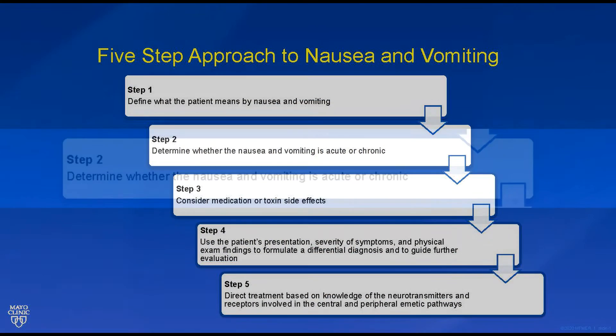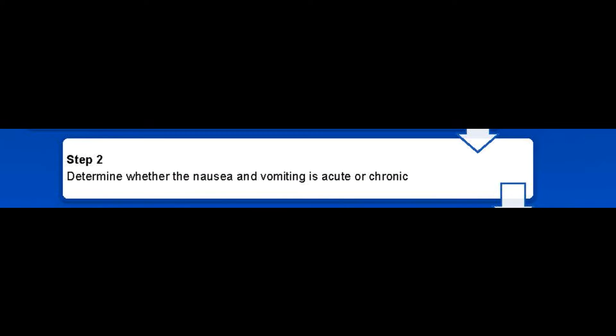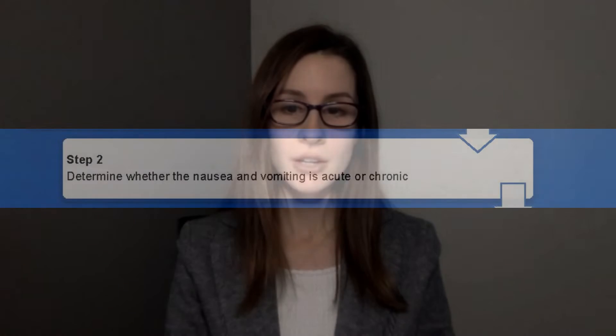Step two involves assessing symptom duration and determining whether the nausea or vomiting is acute or chronic. Acute nausea and vomiting is defined as a duration less than seven days, while chronic symptoms are defined by a duration of greater than or equal to four weeks. For chronic nausea and vomiting, it is useful to consider the following categories: one, medication side effects; two, neurologic causes; three, gastrointestinal diseases; four, metabolic or endocrine conditions; and five, psychosocial etiologies.